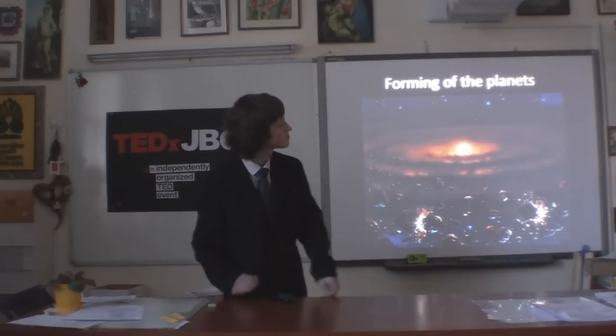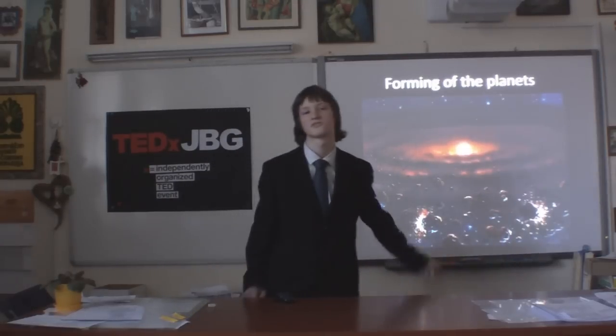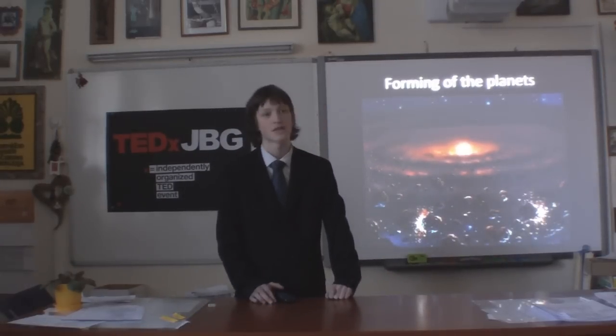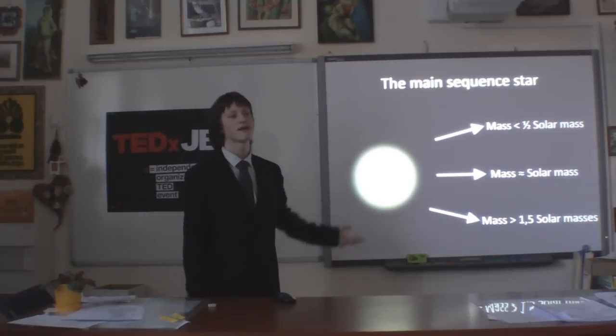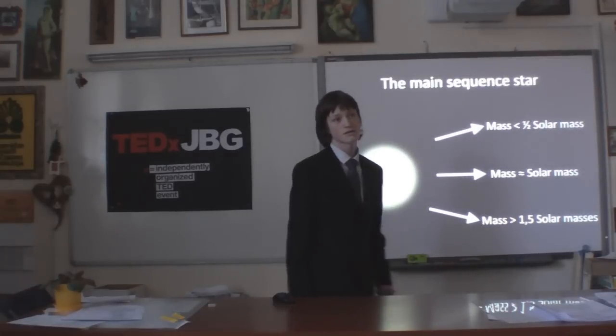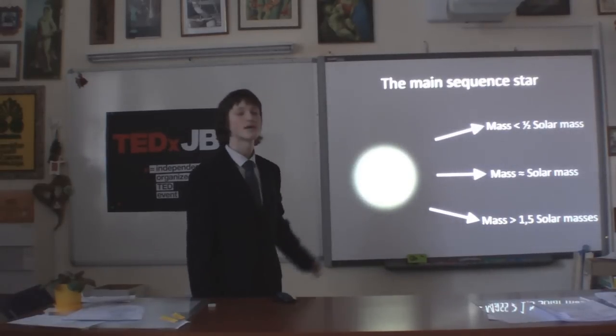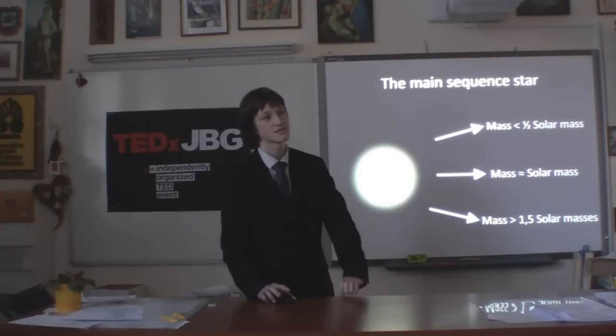This star starts performing fusion, the nuclear fusion, and at this time also planets form. This is our solar system with the Earth and all the planets. And a star has three paths according to mass. A low mass star chooses one path, a solar mass star chooses a second path, and a high mass star chooses a third path.